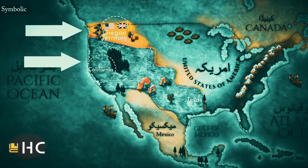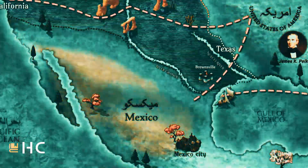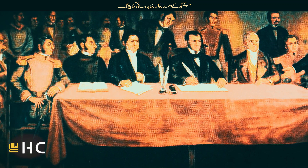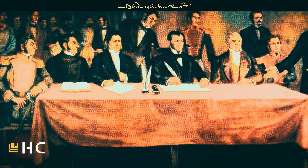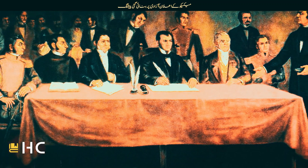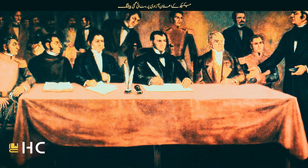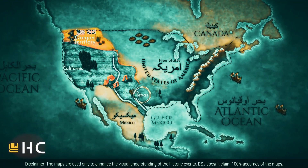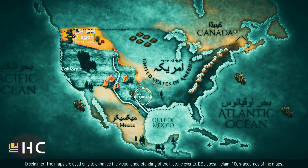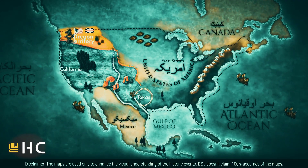The United States now faced two challenges: the first was to control California, and the second was to control Oregon Territory. America was soon successful in the first challenge. First of all, it got the entire territory of Texas without any war or bargaining. Actually, Mexico made a mistake that made this success possible.